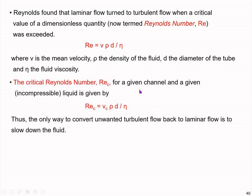For a given channel, we have constant diameter, and for a given fluid at constant temperature we have constant density and viscosity. Therefore, the way we can change the flow behavior is by changing the velocity. By increasing the Reynolds number — by increasing velocity — we can make the flow turbulent, and by reducing speed we can make it laminar. There should be a critical velocity for a given channel and material to switch flow behavior, and this corresponds to the critical Reynolds number.